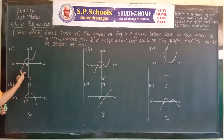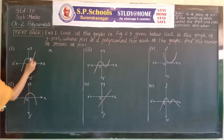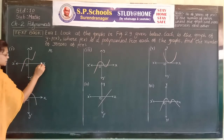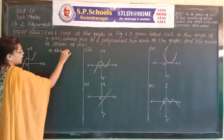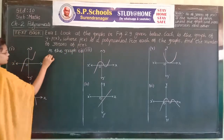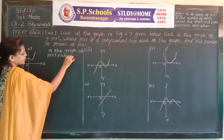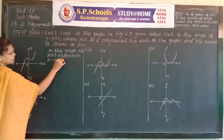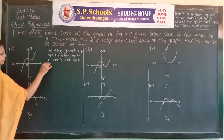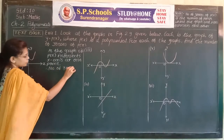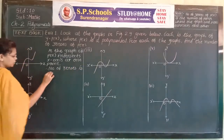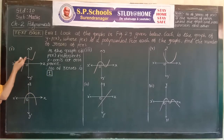This curve represents the graph of y = P(x). From the figure, the graph of P(x) intersects the x-axis at a single point. That's why we can write: the graph of P(x) intersects the x-axis at one point. Therefore, the number of zeros is only one.